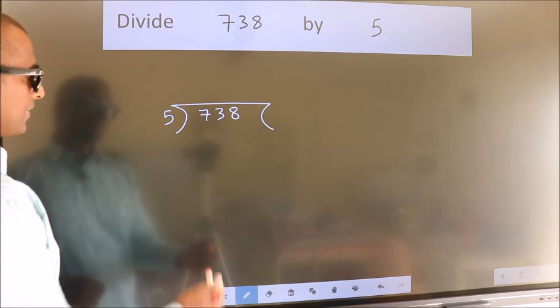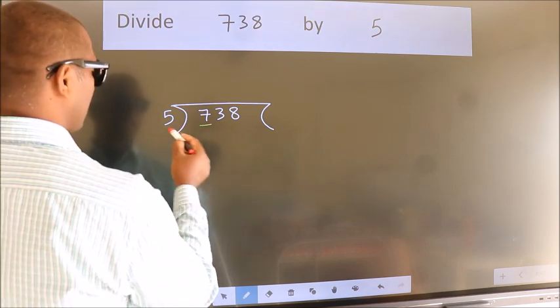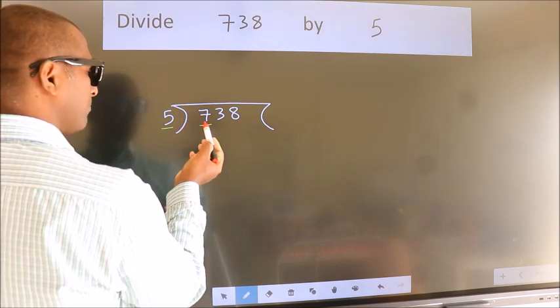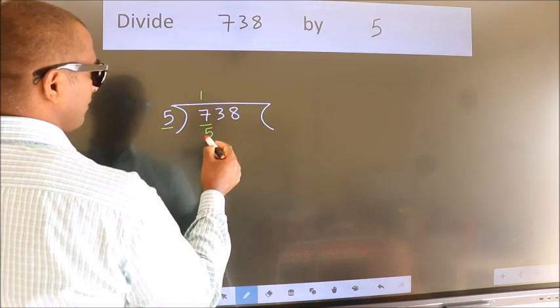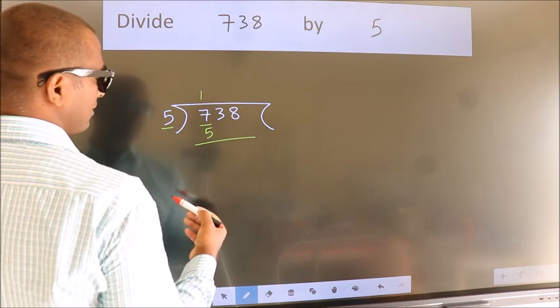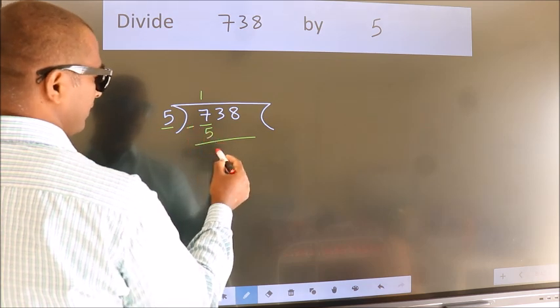Next, here we have 7, here 5. A number close to 7 in the 5 table is 5 once 5. Now we should subtract. We get 2.